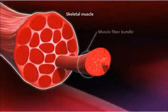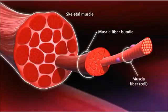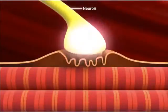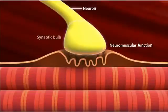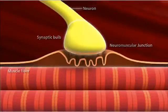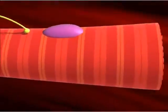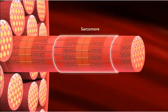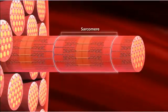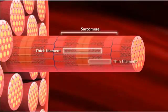Skeletal muscles are composed of bundles of muscle fibers. Muscle fibers are long cylindrical cells containing several nuclei. Muscles contract or relax when they receive signals from the nervous system. A neuromuscular junction is the site of signal exchange — where the synaptic bulb of an axon terminal and muscle fiber connect. Muscle fibers are composed of many myofibrils. A myofibril contains contractile units called sarcomeres, which run adjacent to one another down the length of the myofibril. Each sarcomere consists of alternating thick and thin protein filaments, giving skeletal muscle its striated appearance.